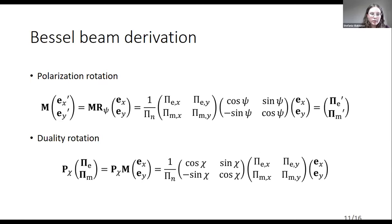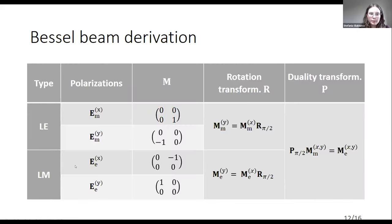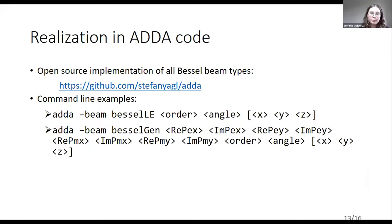We rotate the potential vector accordingly, and this can be simply presented in a table. As you can see, the x and y polarizations of the LE and LM Bessel beam types can be related with the rotation transformation R, and both types are related with the duality transformation P. It was also found that any other special beams can be presented as linear combinations of these four Bessel beams.